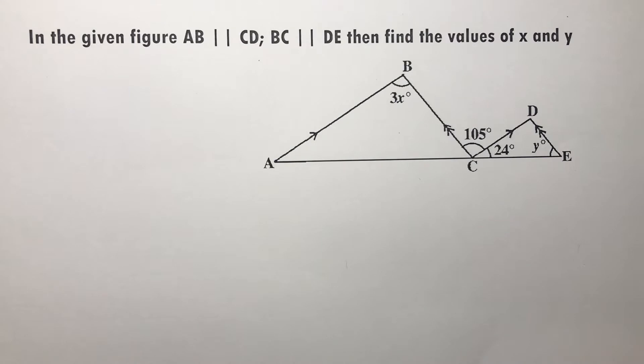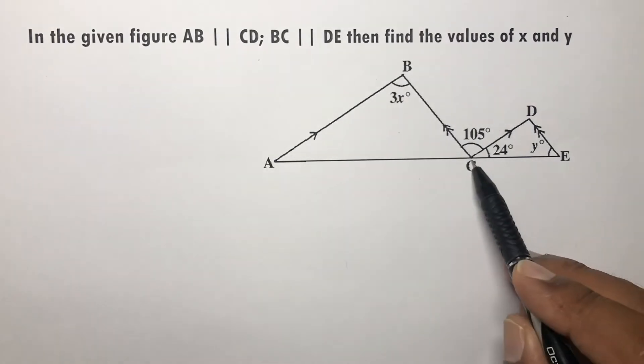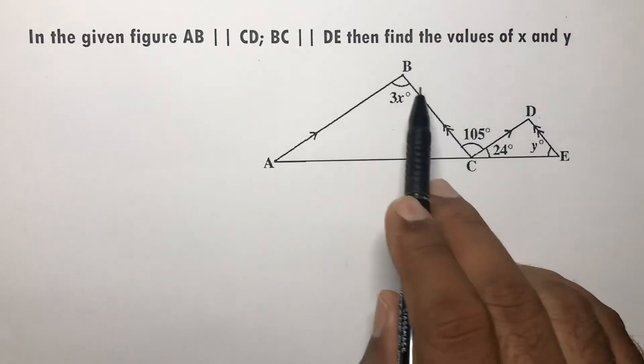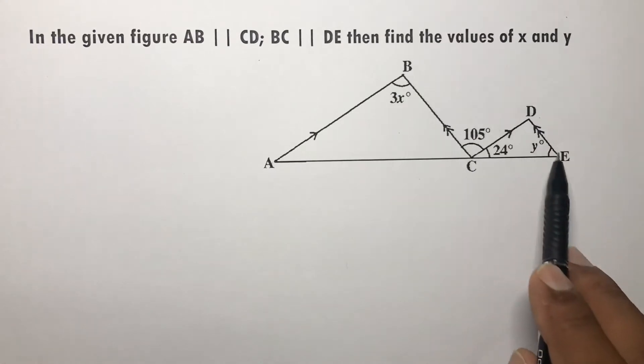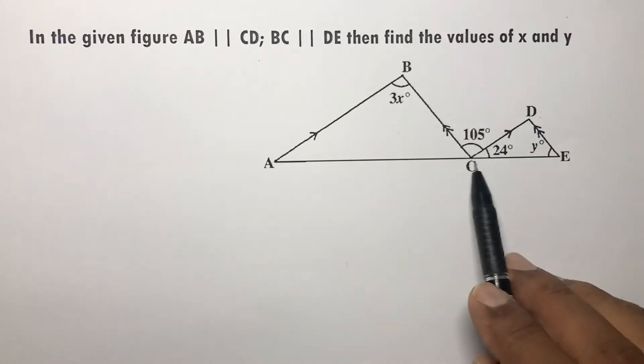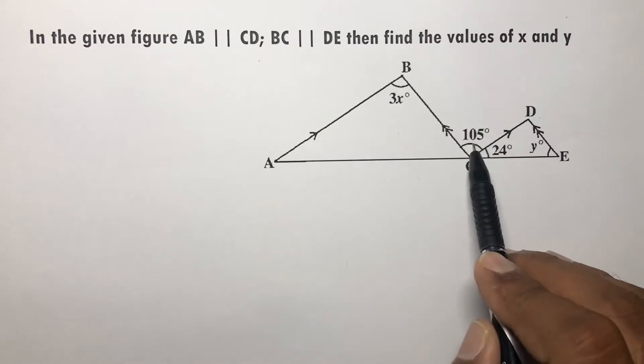In the given figure, AB is parallel to CD and BC is parallel to DE. If AB is parallel to CD, then 3x equals 105.